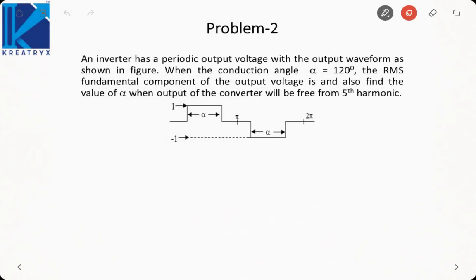In our next problem it is saying an inverter has a periodic output voltage with output waveform as shown, when conduction angle alpha is 120 degrees. This is actually also my pulse width. We need to find the RMS value of fundamental component of output voltage.